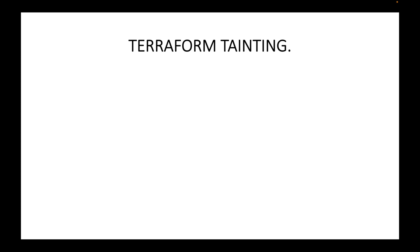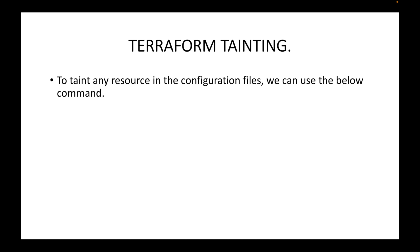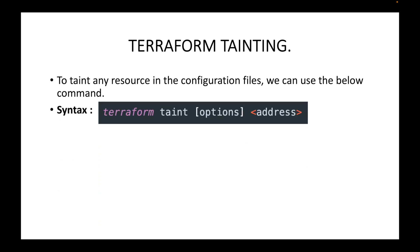To taint any resource in your configuration files, we can use the syntax: terraform taint, followed by any options you want to pass, and then the address of the resource you want to mark as tainted. When you do this, Terraform will mark that resource as tainted, and the next time you run terraform apply, it will destroy and recreate that resource.